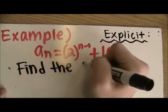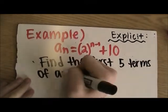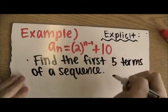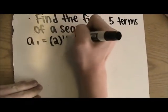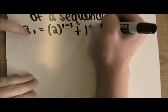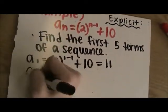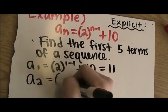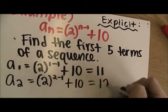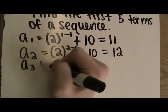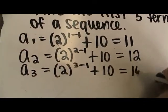Find the first five terms in the sequence. You do this by substituting n: for a1, you put 1 in for n — 2 to the 1 minus 1 power plus 10 — and you will get 11. You can just literally put this straight in your calculator. For a2, you put 2 in for n — 2 to the 2 minus 1 power plus 10 — which equals 12. Then for a3, you put 3 in for n and you get 14.